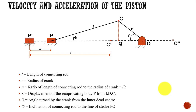Welcome to my lecture. Today we are going to see how to derive the equation for finding acceleration of the piston. As far as inertia force is concerned, we need to know the acceleration of the piston to find out the inertia forces acting on the piston. We know that inertia force is equal to mass times acceleration. The ultimate objective of finding the acceleration of the piston is to determine the inertia forces acting on the piston.